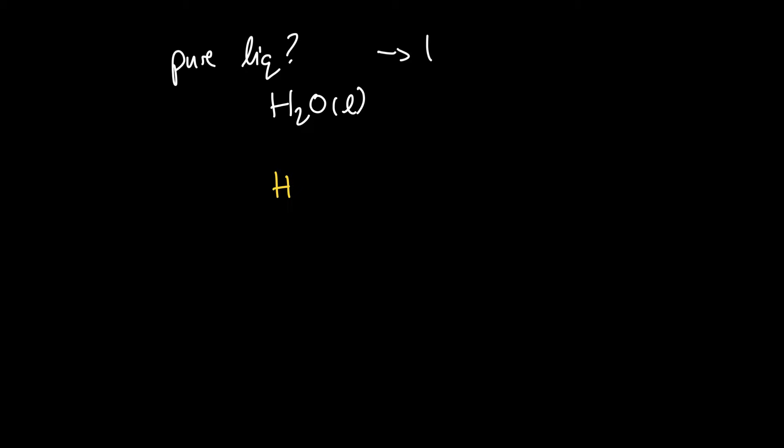For example, here's an equilibrium. We're going to look at the reaction between hydrofluoric acid and water, and it generates the hydronium ion, H3O+, and it also generates the counter ion, fluoride, F-, and we can write down an equilibrium constant.